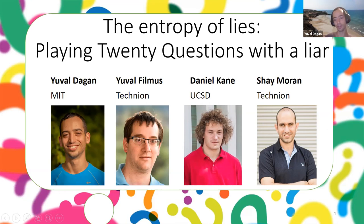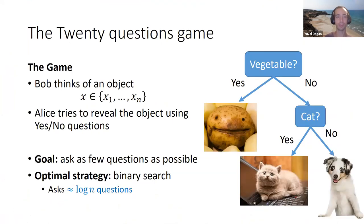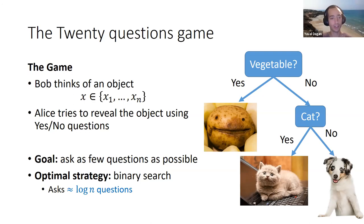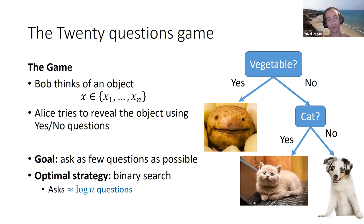As you could have guessed, this paper is about a 20 questions game and I will start by describing a simple variant of this game. It is played by two parties, Alice and Bob, where Bob will think of some object x from a finite set of objects. For example, let's say that Bob would think of a vegetable, a dog, or a cat.